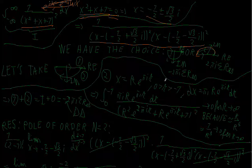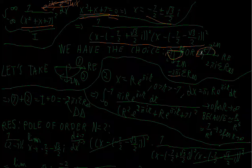We need to remind ourselves that if we go clockwise, which we would do in the lower half plane, we need to multiply the residues by −2πi. If we go in the upper half plane we go counterclockwise, so we multiply by +2πi — counterclockwise is positive. In math they decided counterclockwise is positive.